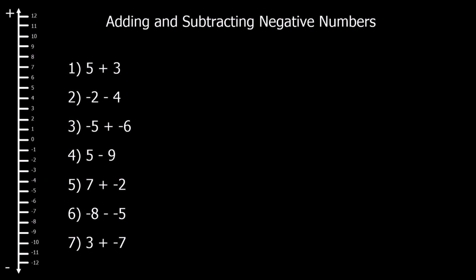Let's try these questions — give them a go, and I'll put the answers up in a minute. Okay, so 5 is our starting point, going up 3: 1, 2, 3 — 8. Minus 2 is our starting point here, going down 4 spaces: 1, 2, 3, 4 — minus 6.